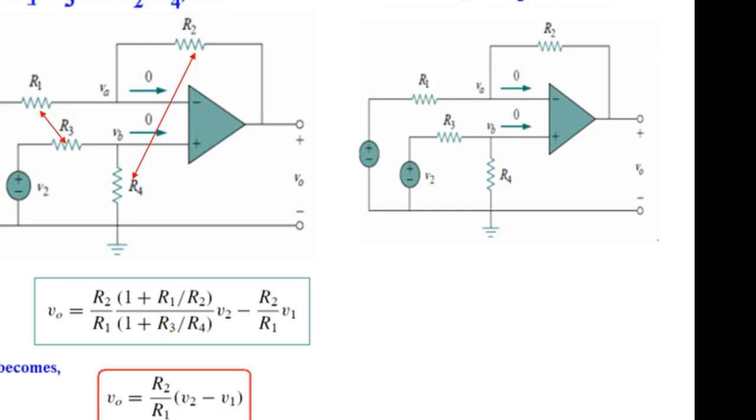this is the formula and this formula if we put R1 and R3 same. So, R3 is equal to R1. And similarly, R4 and R2 same. That means, R4 is replaced by R2. Then, this equation will simplify in this form. Now, you can see that it is the difference of the two inputs, V2 minus V1 multiplied by some factor. This factor, this factor is called the gain.